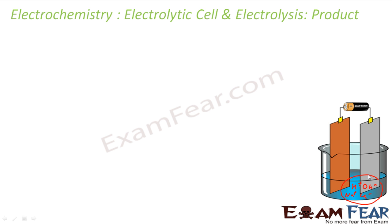The product of electrolysis will depend on the nature of the material being electrolyzed. If the electrodes are inert — for example, platinum or gold — they will not take part in the chemical reaction. They only provide the surface area, acting as a source or sink and providing a platform where the reaction can happen.